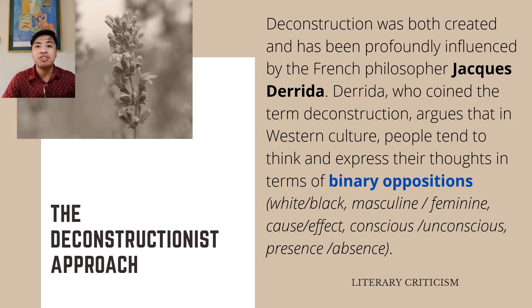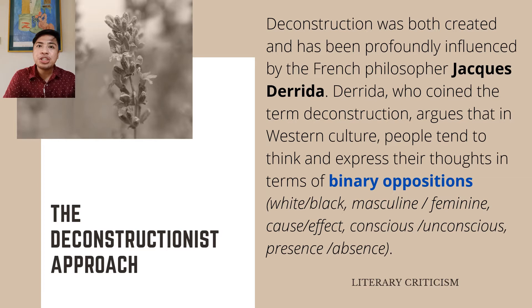Jacques Derrida believed that to interpret a text, we look at how words and syntax are employed, such as finding binary oppositions that comprise the theme or motive of the text. We look at the connotations and denotations of words that may reveal the theme or motive. According to Derrida, binary oppositions refer to two opposite words where one is superior to the other, and that relationship may be reflected in the literary text, forming its motive or theme.